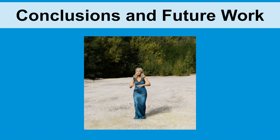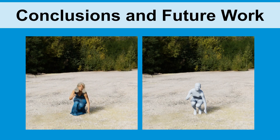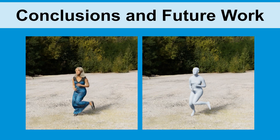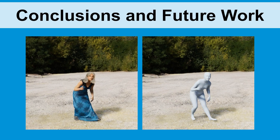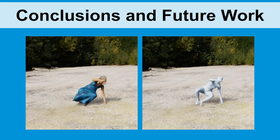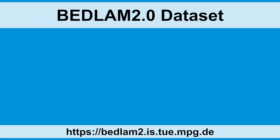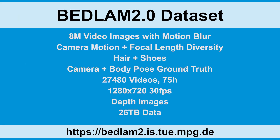Synthetic data is a key ingredient for training accurate methods for human pose and shape estimation. It has several advantages over real imagery: it's 100% accurate, there are no privacy concerns, and we can generate as much as we like. We make the assets needed to generate new data from Bedlam 2 available for research where possible and provide links to assets we don't own. While we've focused on HPS, Bedlam 2 can support many other applications, such as non-rigid structure from motion, 3D point tracking, depth estimation, and segmentation, to name a few.